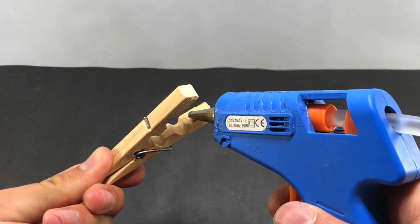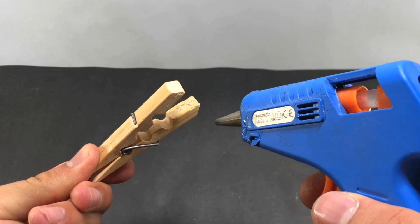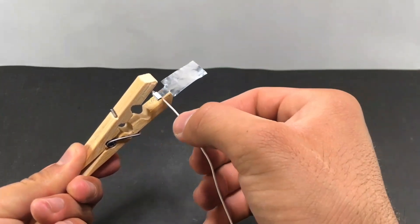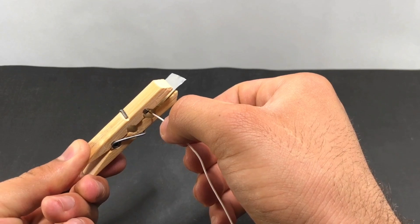Add hot glue to the inside of the wooden clip. And we connect the foil to the inside of the clip and connect the outer parts to the clip.